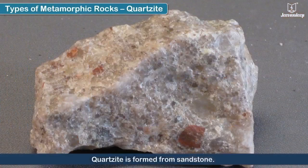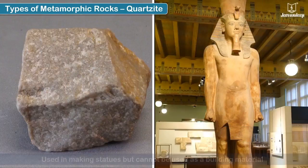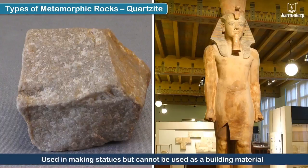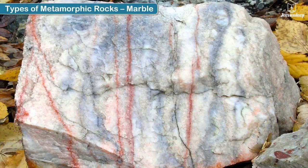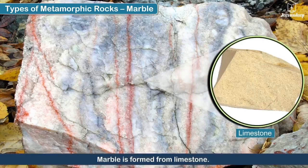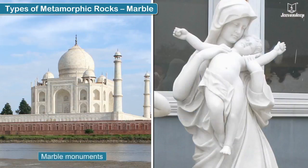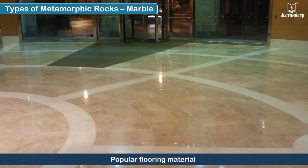Quartzite is formed from sandstone. It is used in making statues, but being a very hard material, it cannot be used as a building material. Marble is formed from limestone. Marble can be carved and polished easily and is therefore widely used. We often find marble monuments and statues, and it is also a popular flooring material.